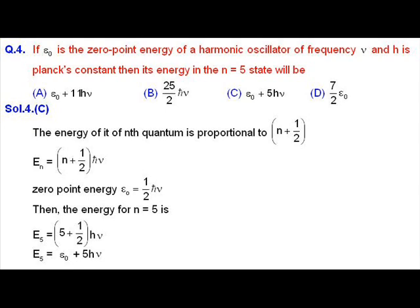MCQ question number four. ε₀ is the zero-point energy of a harmonic oscillator of frequency ν, and h is Planck's constant. We need to find the energy eigenvalue for the n = 5 state. For the harmonic oscillator, the energy eigenvalue in the nth state is E_n = (n + 1/2)ℏω. For the ground state n = 0, the zero-point energy is ε₀ = (1/2)ℏω.